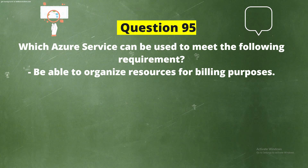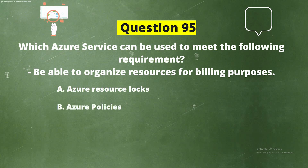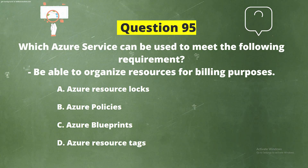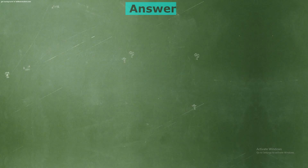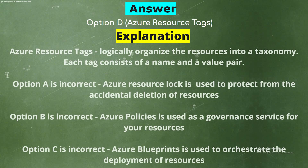Question 95. Which Azure service can be used to organize resources for billing purposes? The options are: Azure Resource Locks, Azure Policies, Azure Blueprints, or Azure Resource Tags. The correct answer is Option D: Azure Resource Tags. Azure Resource Tags logically organize resources into a taxonomy — each tag consists of a name and a value pair.